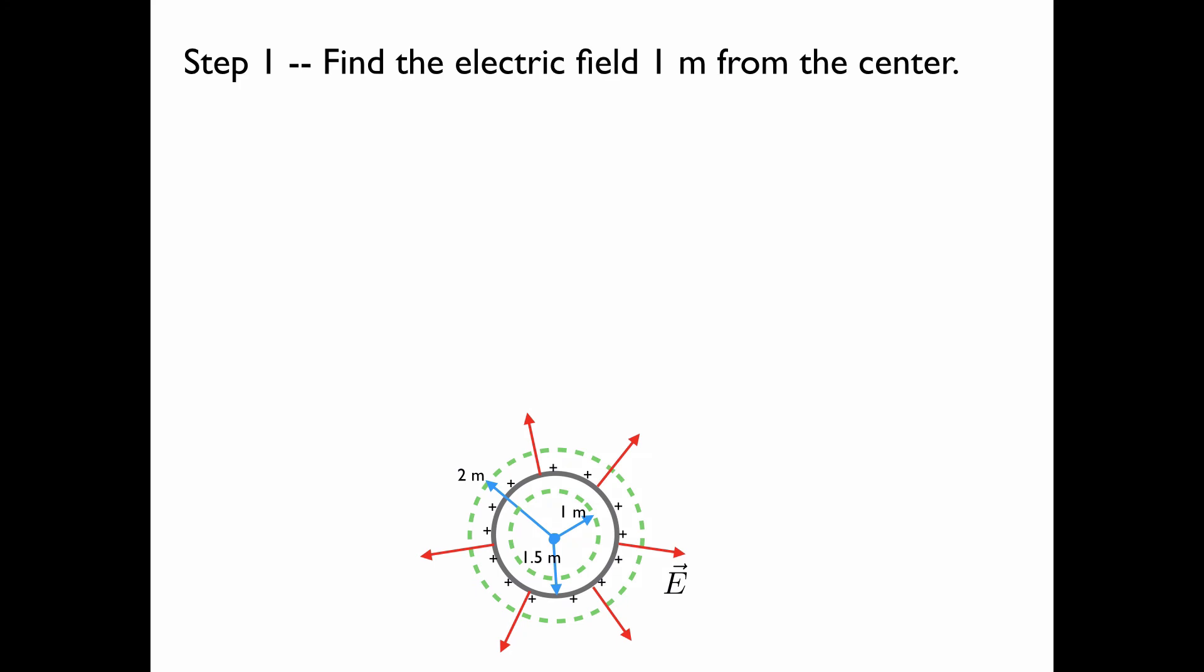Step 1 will be to find the electric field 1 meter from the center. However, the electric field inside a conductor is always zero. It doesn't matter if the conductor is hollow or not, it doesn't matter what shape the conductor is, the electric field inside a conductor is always zero. So at 1 meter from the center the electric field is zero.